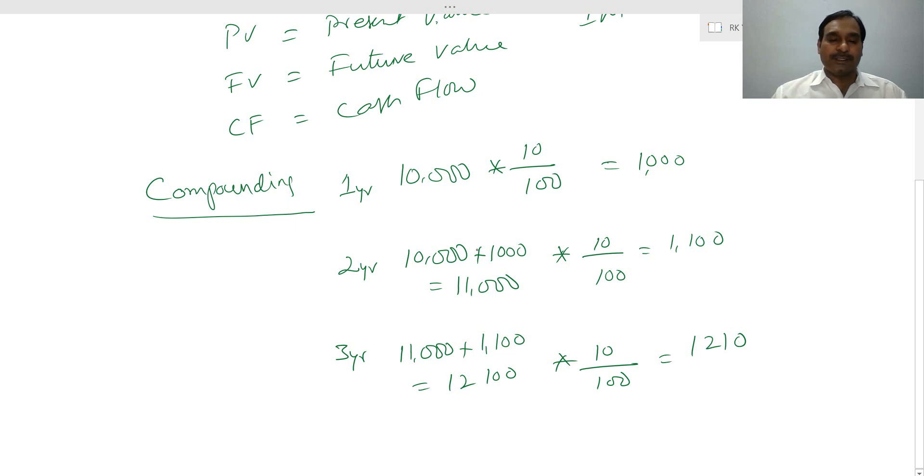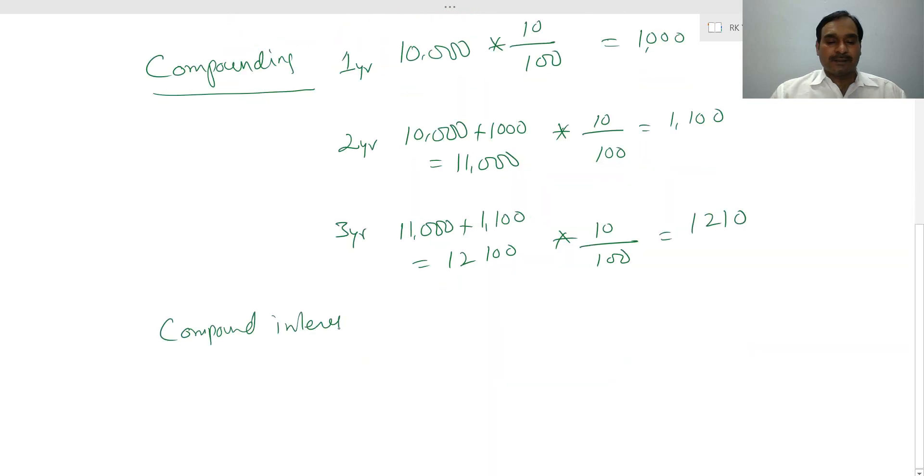So this we call as compounding, in the sense your principal amount is added with interest. Whatever the interest that you earn will be reinvested. Compound interest equals interest on interest.